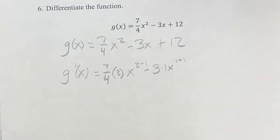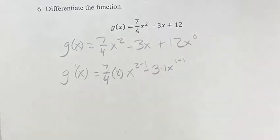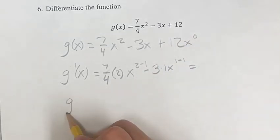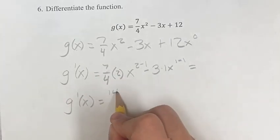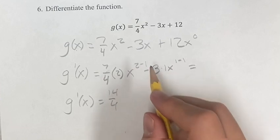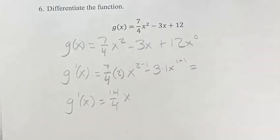You can remember that by x to the 0, so bringing down the 0 would just be multiplying it by 0, so that just disappears. So g'(x) equals (7/4) times 2 is 14 over 4, x to the (2 - 1) is x to the 1, which is just x.